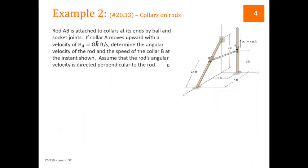Another type of problem using the general planar motion equations — without rotating coordinate systems — involves collars moving on rods. In these cases we know information about the velocity of points A and B because they move along the direction of their respective rods. From that we can determine the velocities, angular velocities, and accelerations of the rod itself. Here we have rod AB: collar A moves up its shaft at 8 feet per second, and collar B moves along a second shaft.